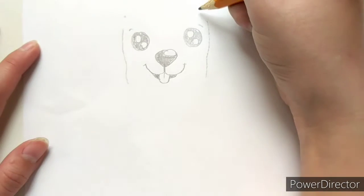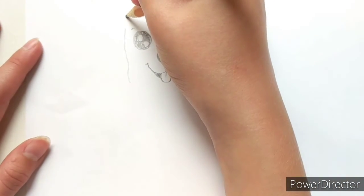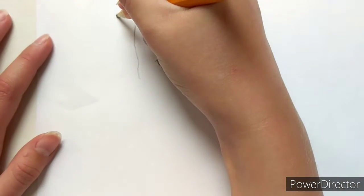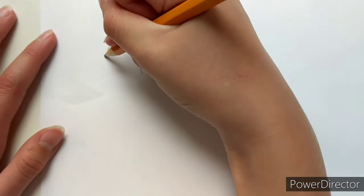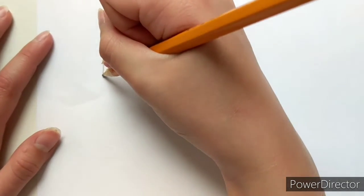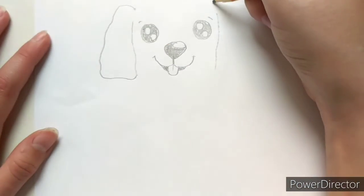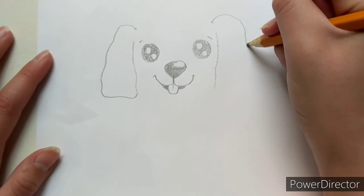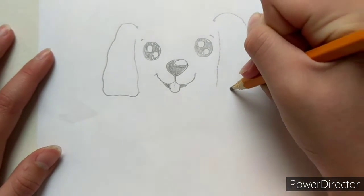Now make two points and we are going to be making the ear. Try and make it look similar on each side.